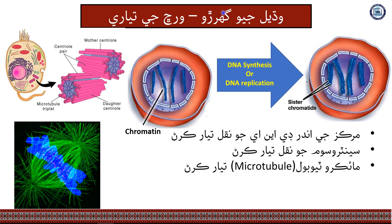Interphase includes G1, or Gap 1. When G1 begins, the cell prepares for DNA replication. It prepares chromatin and duplicates the Centrosome, including Centrioles, which are used in forming microtubules.